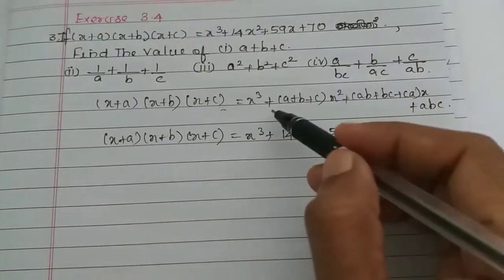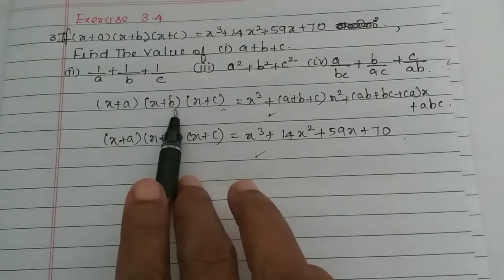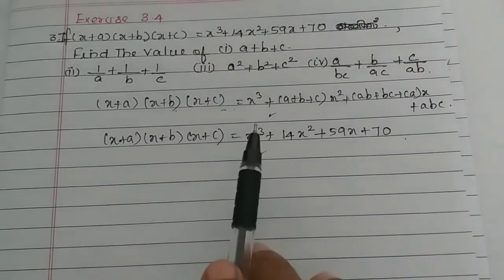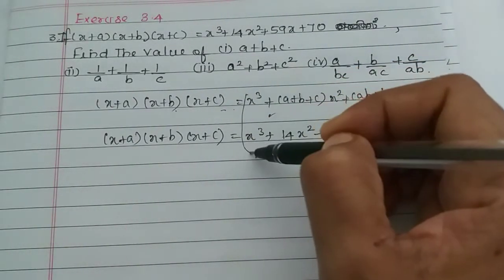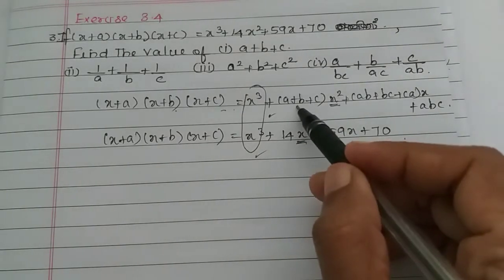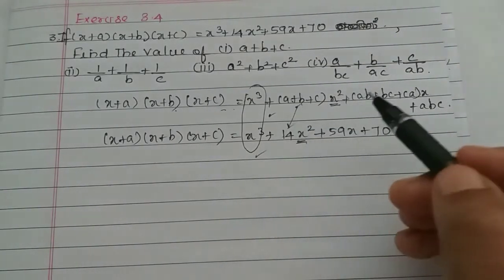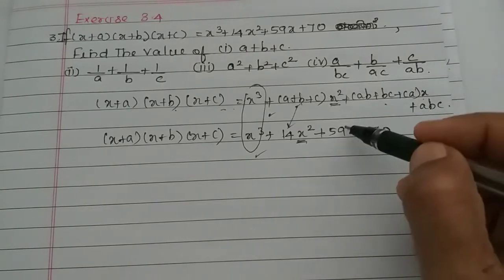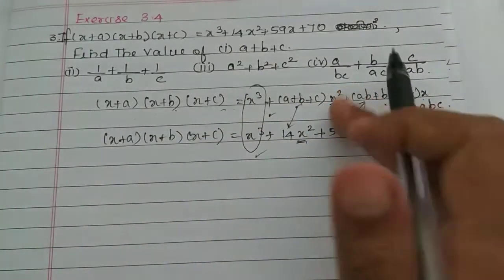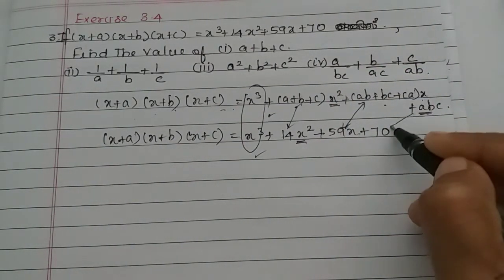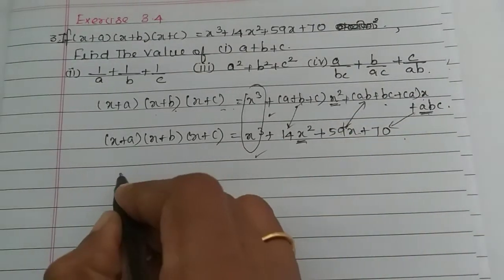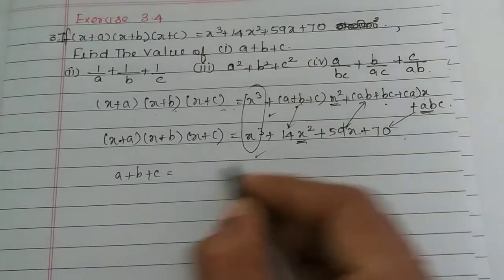This equals x³ + 14x² + 59x + 70. Now we compare the two expressions. By equating the coefficients on both sides, equation 1 and equation 2, comparing the values — a + b + c equals 14.